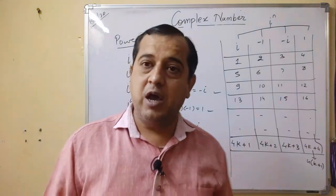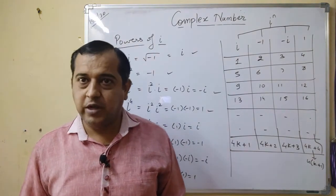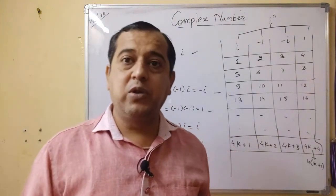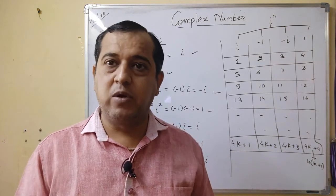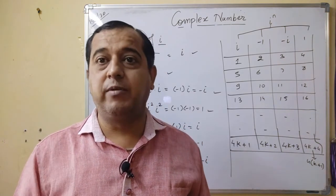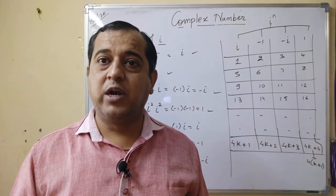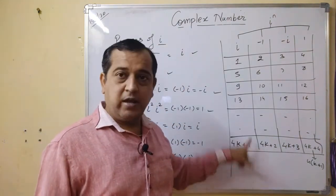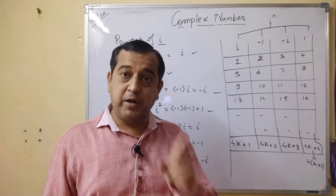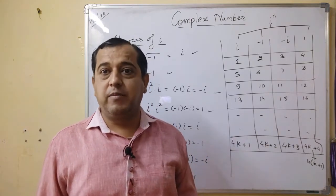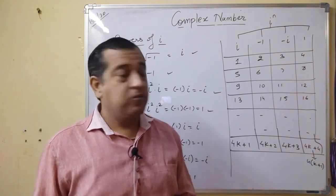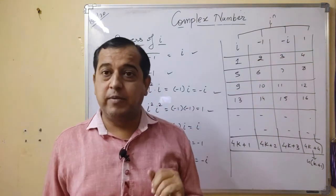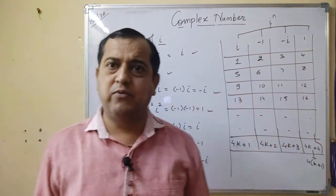Okay, now if the power is a large number, then what will you do? For the power given, divide by 4 and find the remainder. If remainder is 1, then answer is i. If remainder is 2, answer is -1. If remainder is 3, answer is -i. And if remainder is 0, meaning divisible by 4, answer is 1.